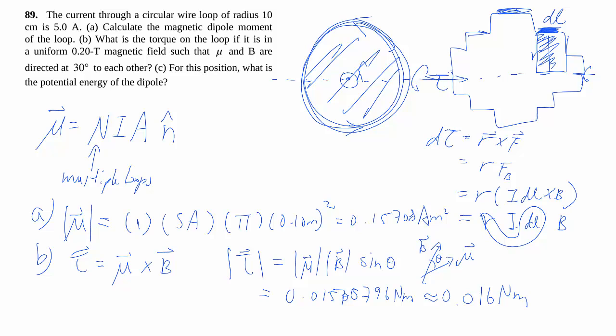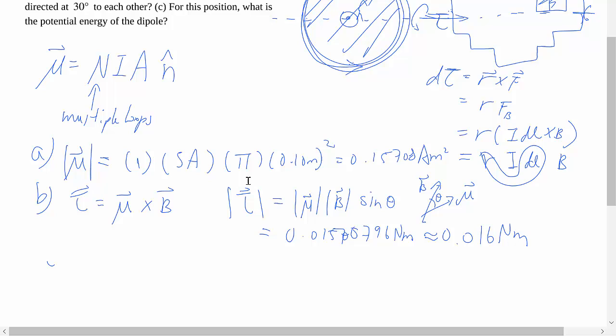Once we have the magnetic dipole moment defined, it's actually quite easy to find the torque on that loop given its specific orientation to the magnetic field.